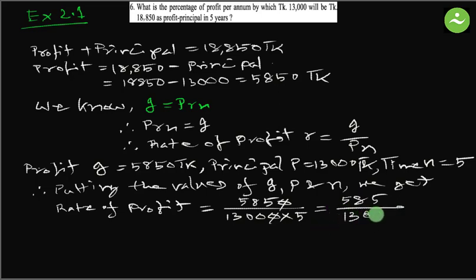Here we have to remember that we have to express the rate in percentage. Equals 585 divided by 13 multiply 5 multiply 100.